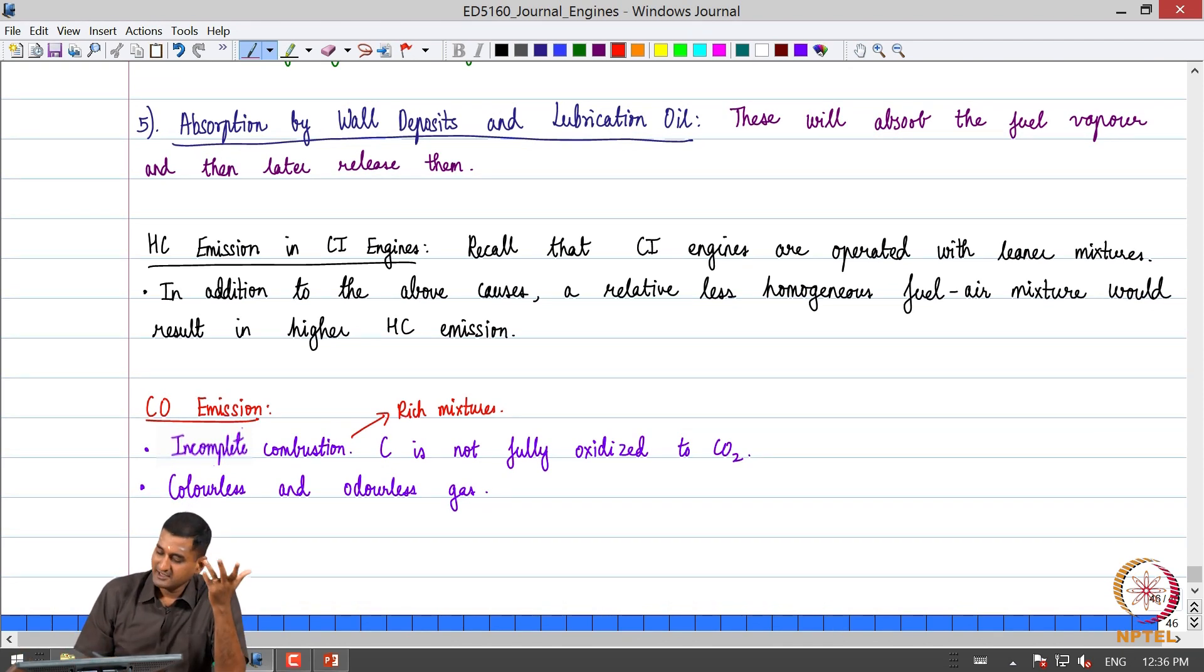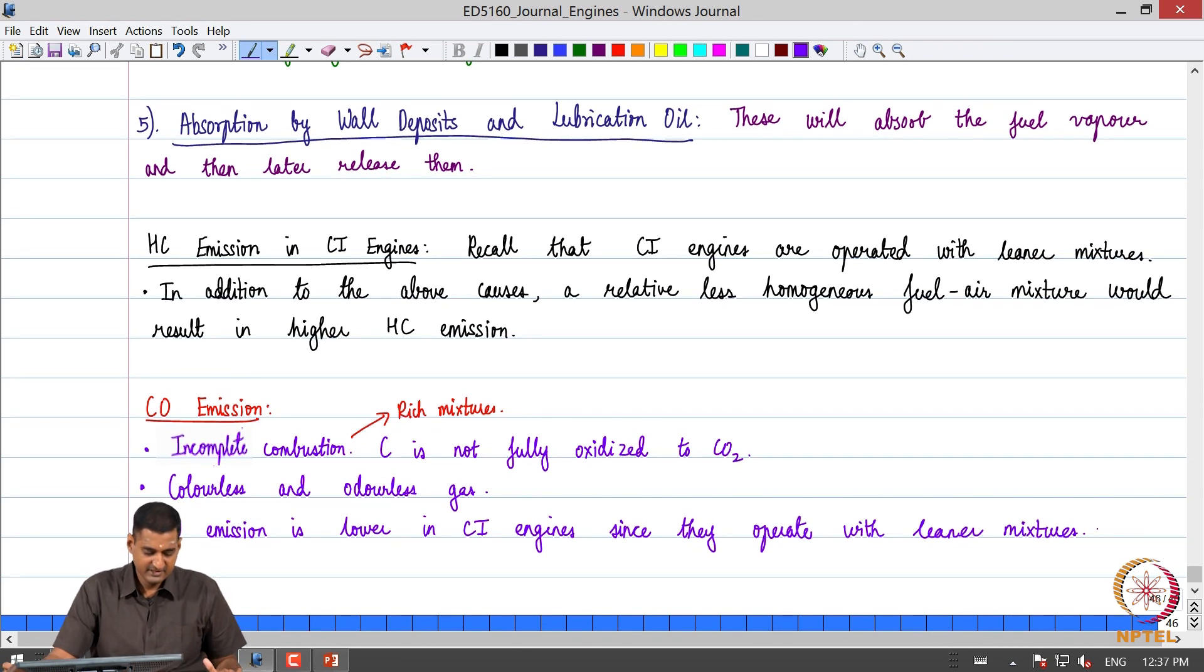That is also another aspect that we need to look at. CO emission once again is relatively lower in compression ignition engines for the same reason, since they operate with a lean mixture.